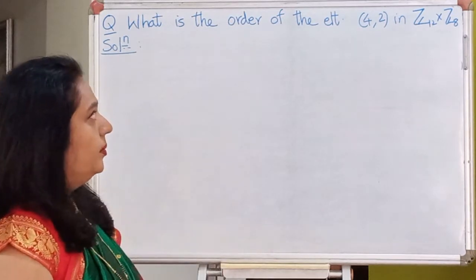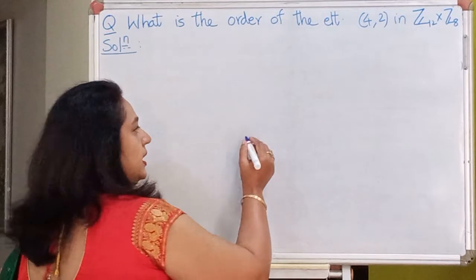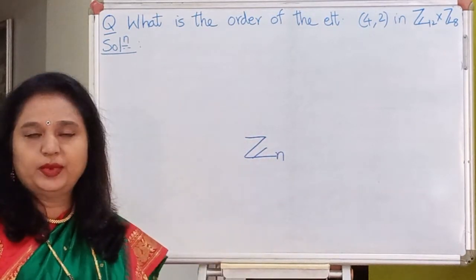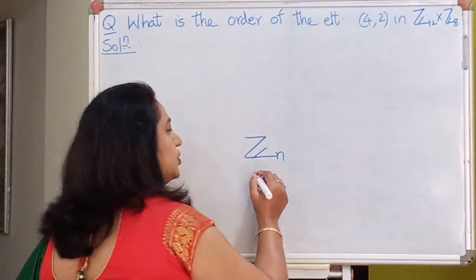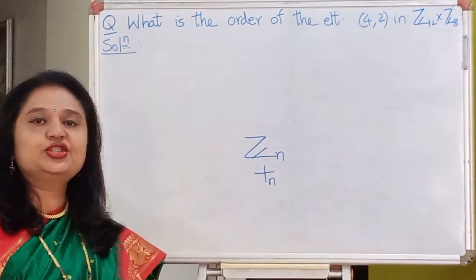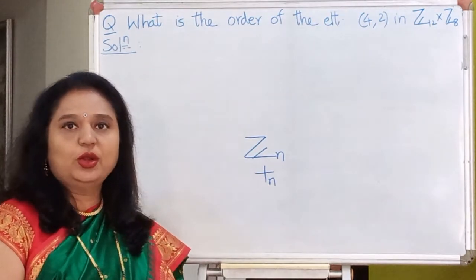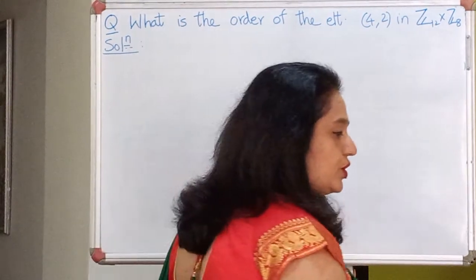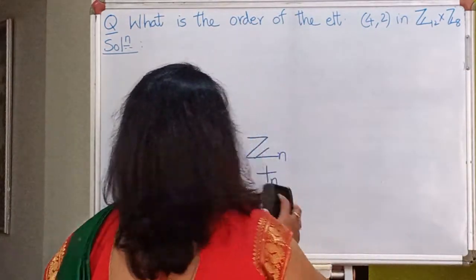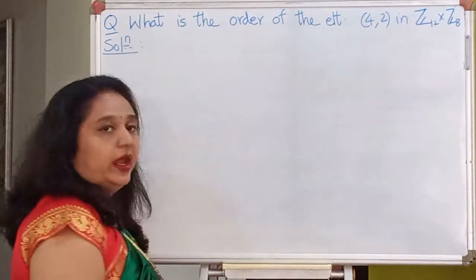By the way, even if it is not mentioned, it is understood that if I refer to Zn as a group, then the operation I have in mind is addition modulo n. Because we know that with respect to multiplication modulo n, it's not a group. So whenever we talk about Zn, the operation on it is addition modulo n.